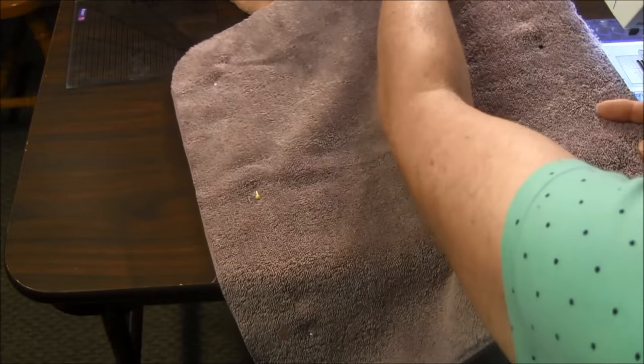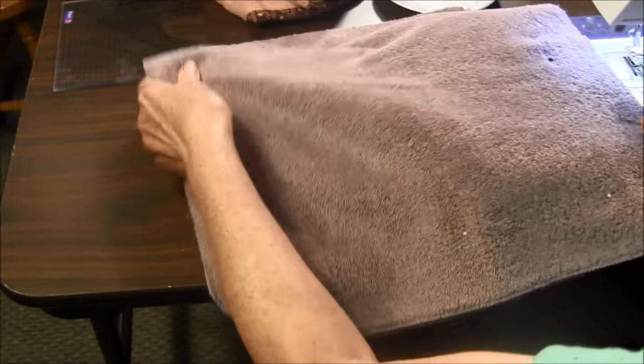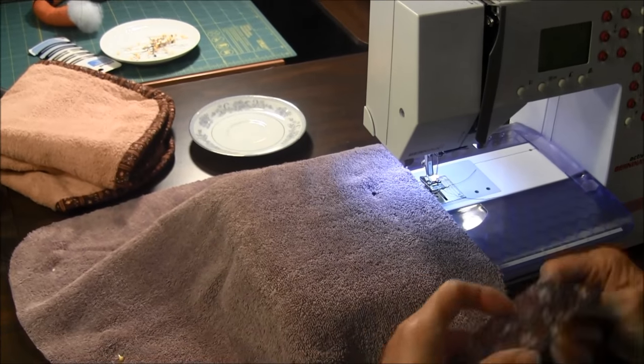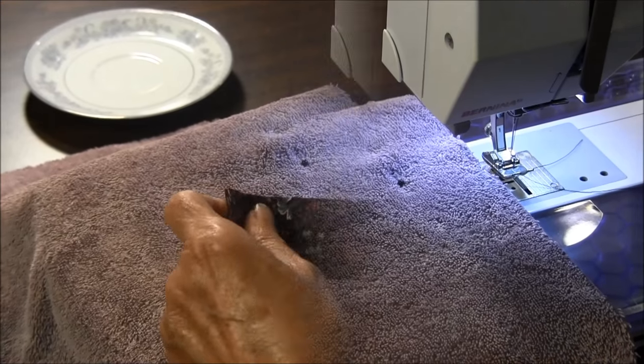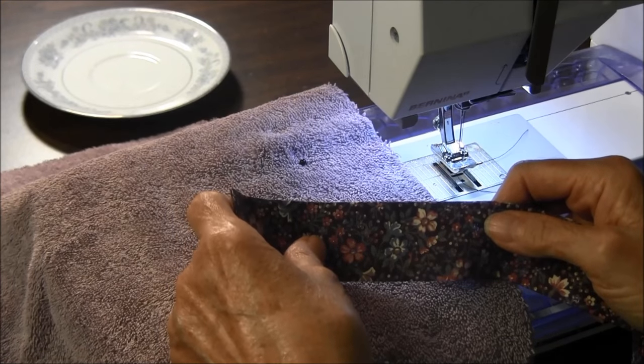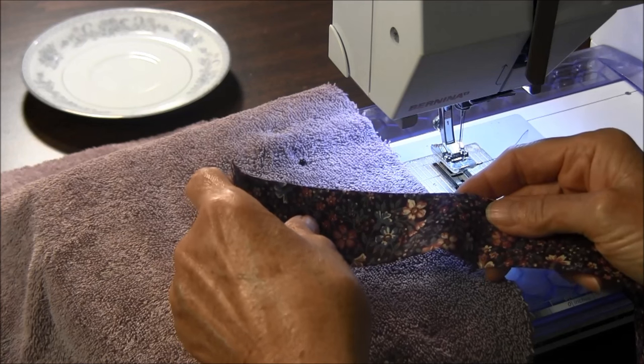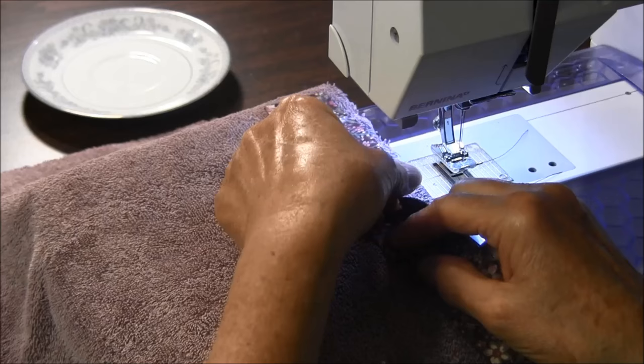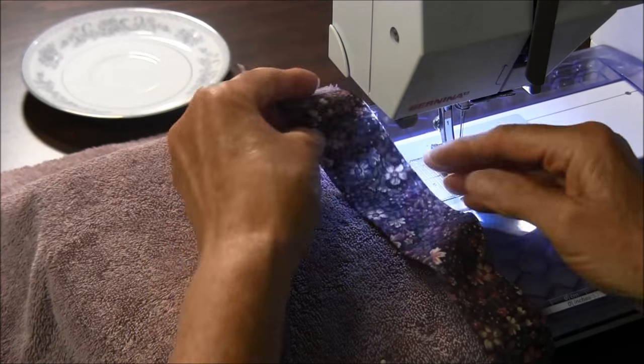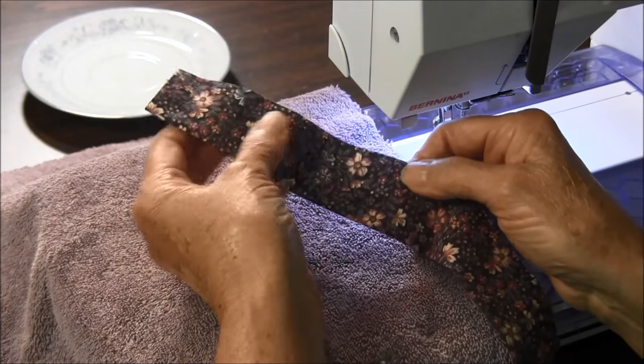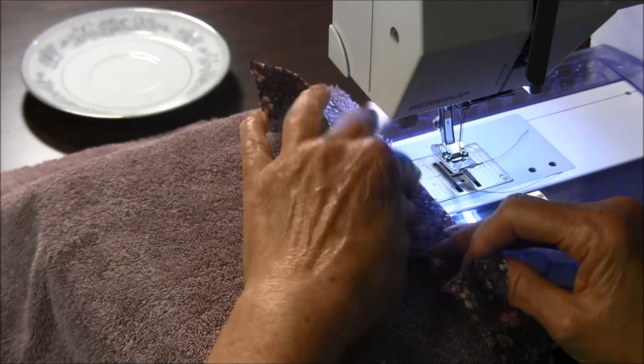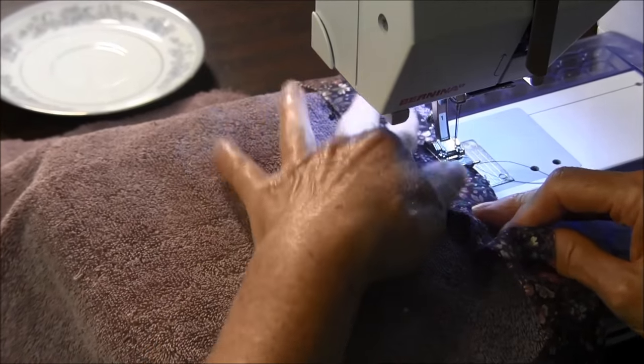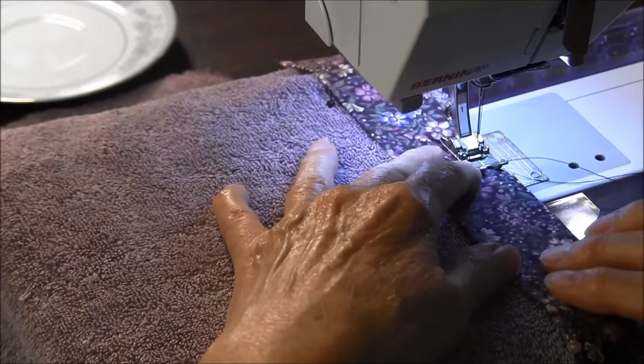Next, you're going to use a quarter-inch seam allowance and start to stitch your binding onto it. Line the binding on the raw edge of the mat with the folded edge inside and the raw edges along the mat. Leave about a six-inch tail when you start, then begin sewing.